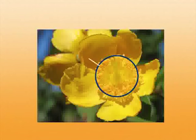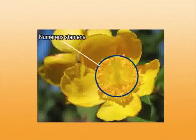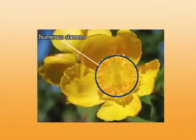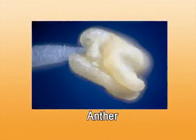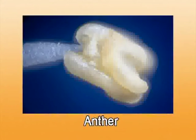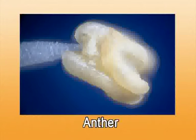Coming to the reproductive part, starting with the androecium — the male part of the flower — which is comprised of the stamens. Stamens are here indefinite, meaning numerous in number. They are hypogynous, polyandrous, and free. They are spirally arranged, which is very unique to the Ranunculaceae. The filaments are long, and the anthers at the top of the stamens are dithecous and extrorse, with longitudinal dehiscence.